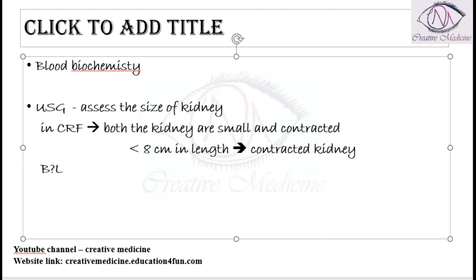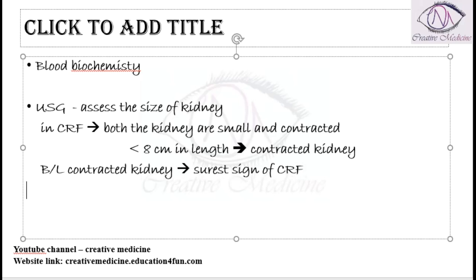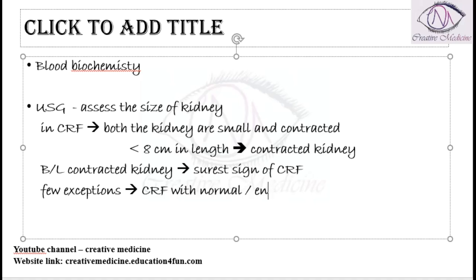If there is bilateral contracted kidney, then it is definitely the surest sign of chronic renal failure. However, there are a few exceptions where the patient can have chronic renal failure with either normal or even enlarged kidney size.